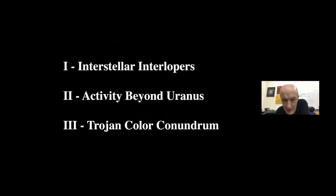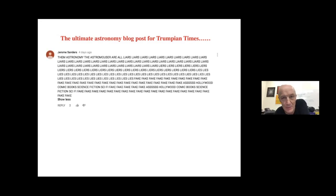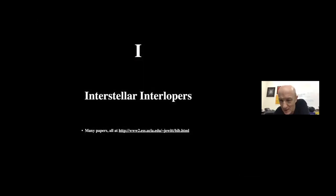The subjects that I would like to discuss are basically interstellar interlopers, a comet in which we detect activity where no activity is possible according to the standard model for activity, and then at the end, the Trojan color conundrum. I'll go through them fairly quickly and explain them as simply as I can.